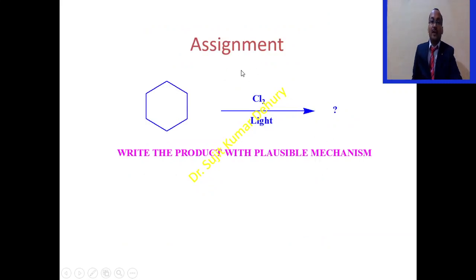Here is one problem for you guys. When cyclohexane will react with the reagent chlorine in presence of light, what would be the product? And you have to write the possible or plausible mechanism by using free radical pathways.